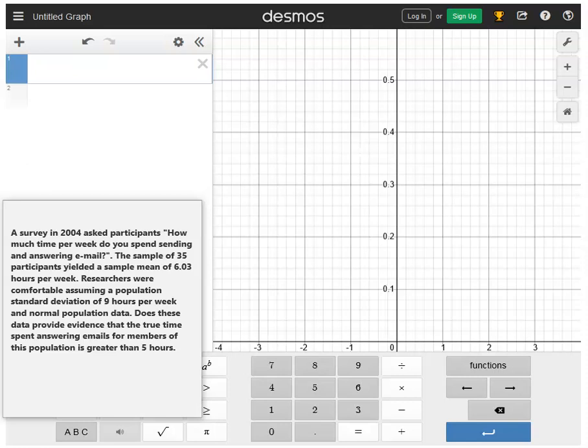Alright, let's say we had a survey given out a while ago. The survey, one of the questions said, how much time do you spend sending and answering emails? So here's the information that I really need to take away from it. The sample size is 35, so N in the Z-statistic formula is going to be 35. The sample yielded a sample mean of 6.03 hours per week. So the sample mean, that's going to be the x-bar in our formula.